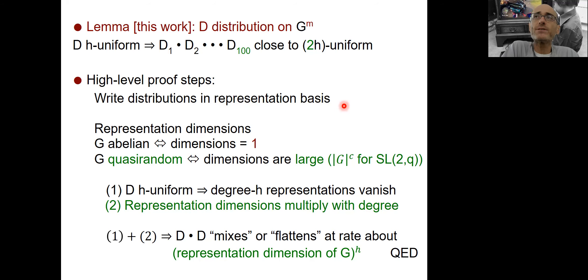So we're going to write the distribution in representation basis. So this is somewhat similar to the standard Fourier analysis for abelian groups, but now instead of one-dimensional, you have higher-dimensional matrices. So the representation has dimensions, and the abelian case again is the familiar case in which all the dimensions are one. And if g is quasi-random, then the dimensions are large. So any representation has large dimension. For a group like SL(2,q), the representation will be a power in the size of the group, which is as good as it gets. In fact, the power here is one-third, which is optimal.